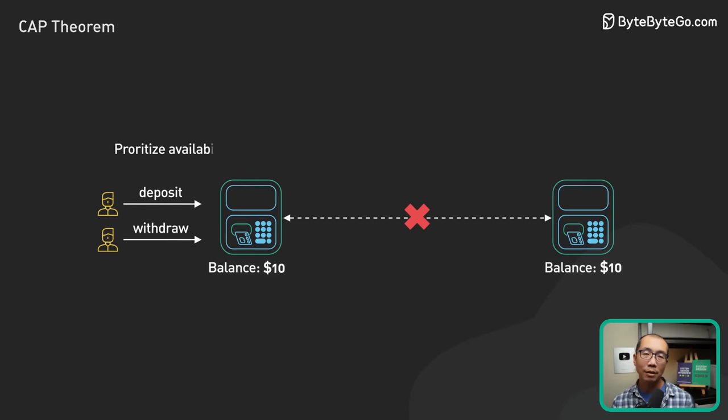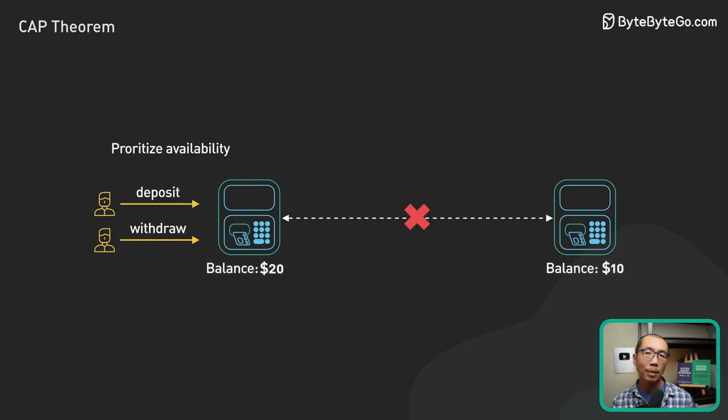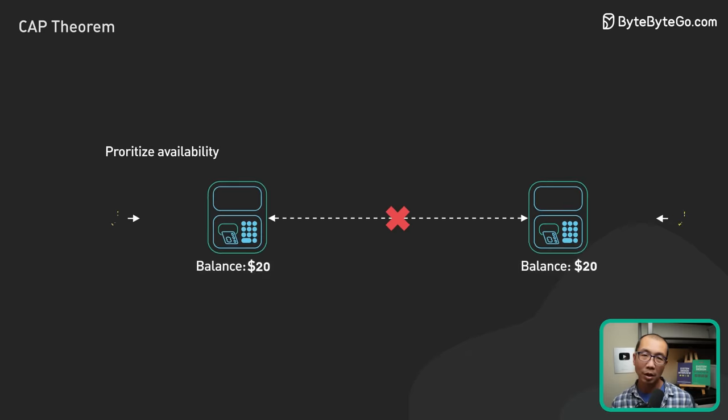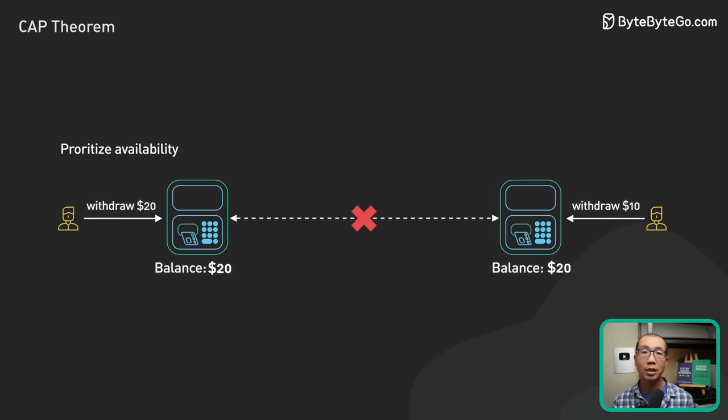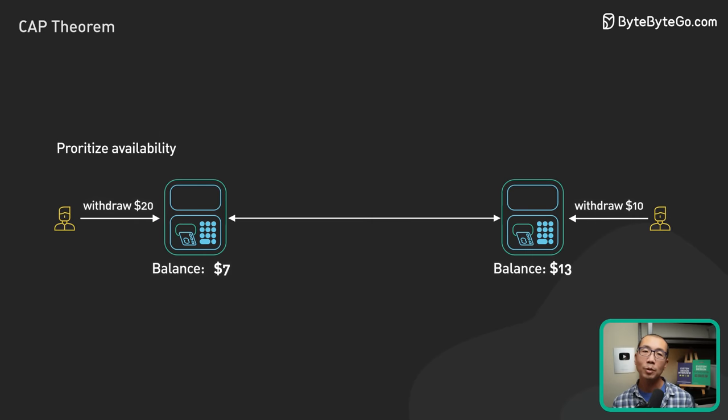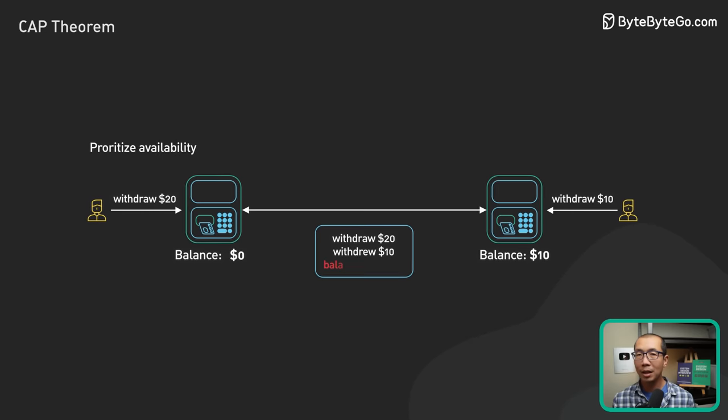If the bank prioritizes availability, the ATM may allow deposits and withdrawals to occur, but the balance may become inconsistent until the partition is resolved. When there is a network partition, the customer could withdraw the entire balance from both ATMs. When the network comes back online, the inconsistency is resolved and now the balance is negative. That is not good.